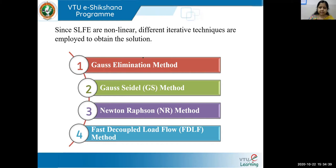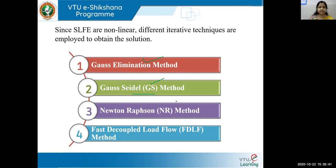Basically we have three methods for load flow analysis. The first is the Gauss-Seidel (GS) method. I will explain the difference between the Gauss elimination method and the updated Gauss-Seidel method in the next lecture. The second method is the Newton-Raphson (NR) method, and the third is the Fast Decoupled Load Flow (FDLF) method. The GS method is in module one, while NR and FDLF are discussed in module two.